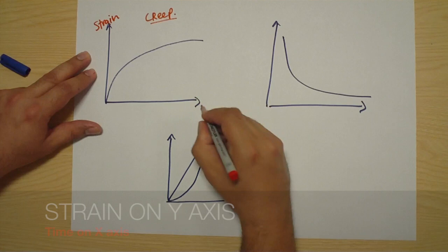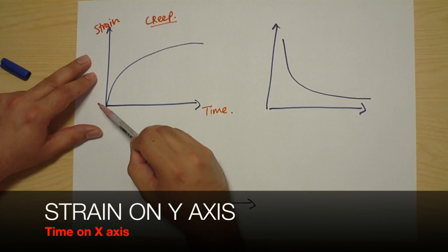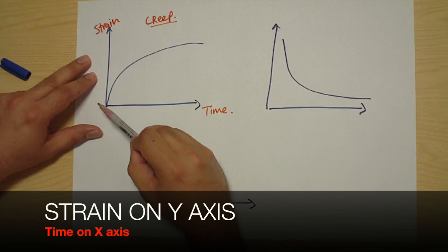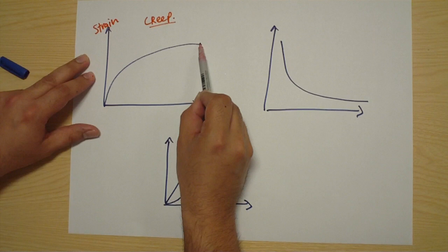This can be graphically represented with strain on the y-axis and time on the x-axis. So the material is loaded and there's initial rapid deformation, and this slowly plateaus out with time.